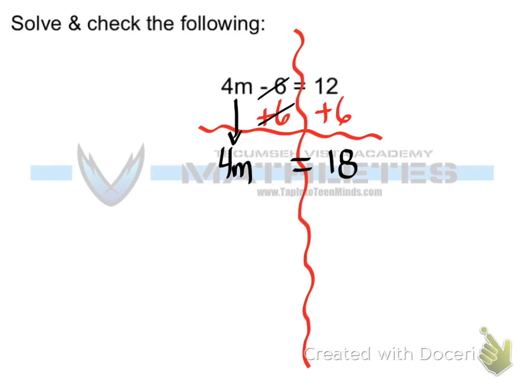Our second step would be looking and seeing that we have four times m. Noticing any number next to a variable, that is an assumed multiplication. So we're going to divide out that four and whatever we do on one side we do on the other. The goal here being that four divided by four leaves us with one m.